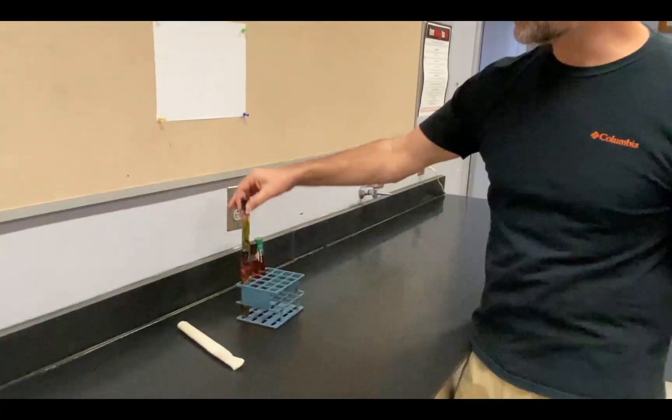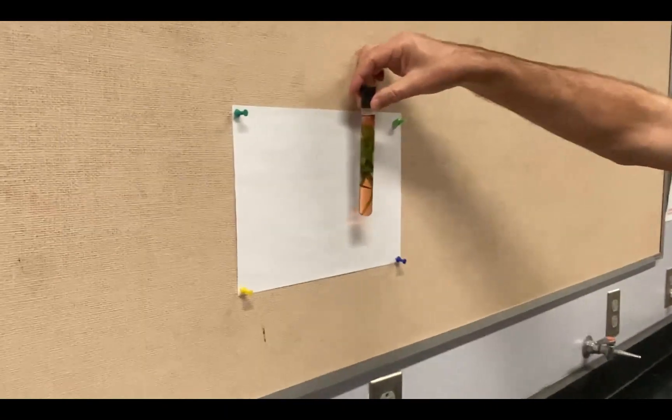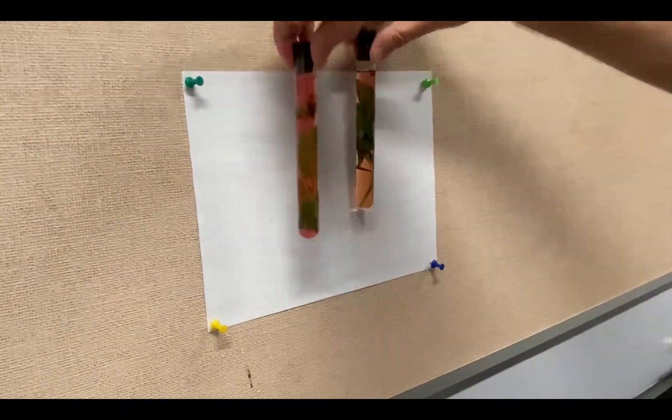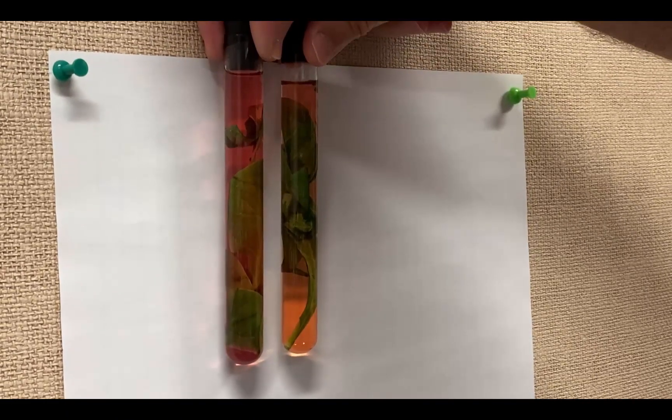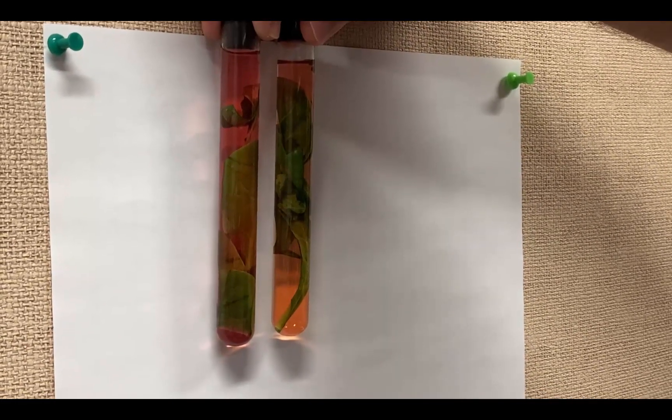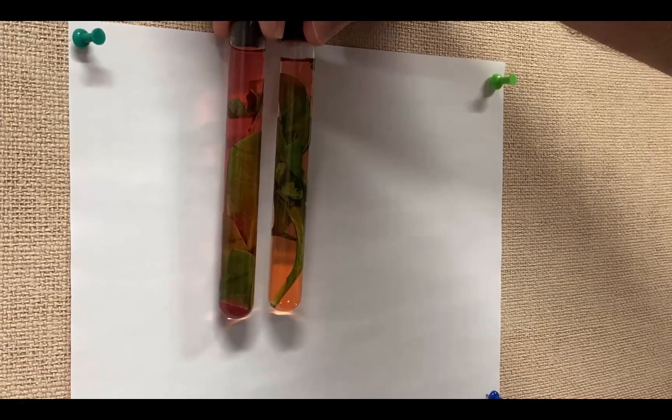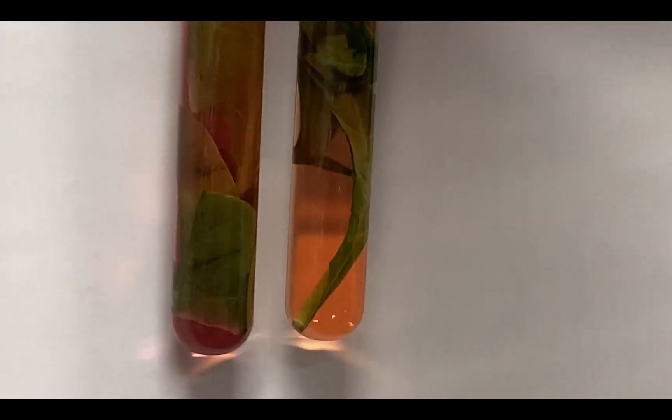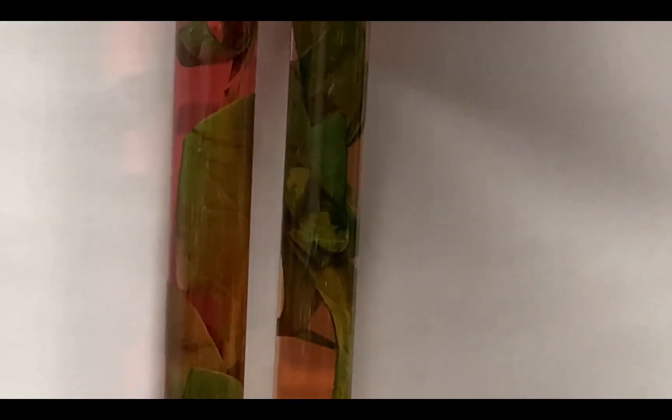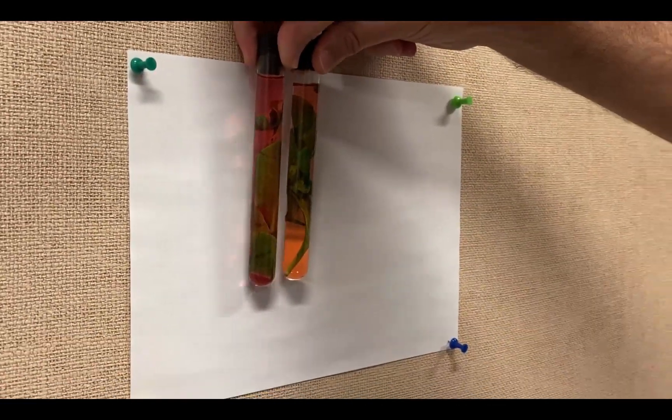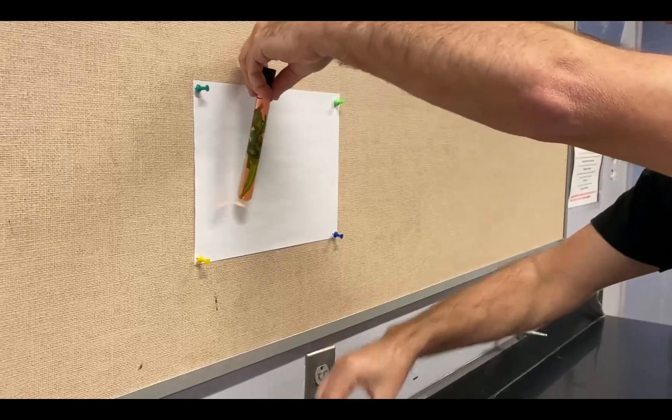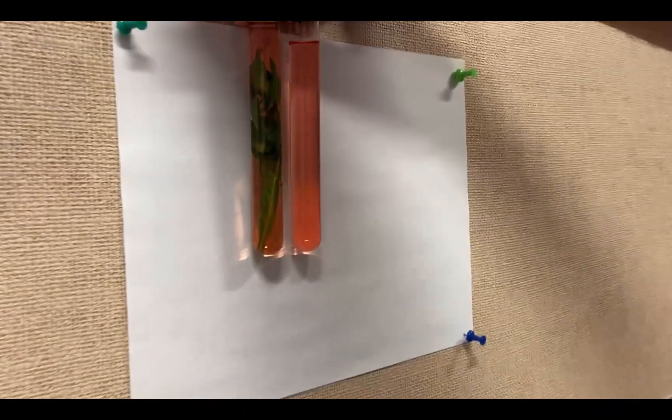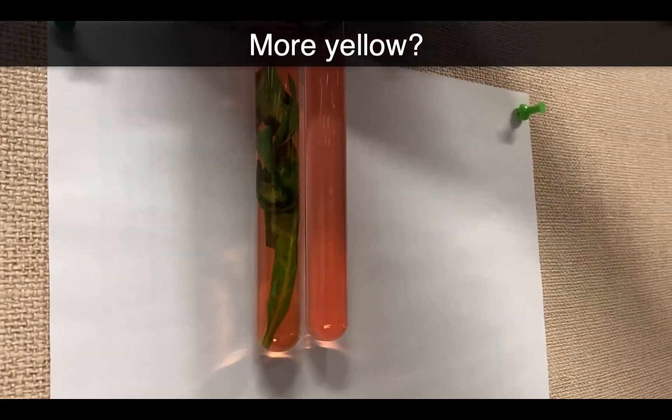Let's take a look at tube number two. I'll hold it up against tube number one. They started out the same color but are definitely not the same color now. We saw a color change in tube one, whereas tube number two actually got more yellow than it was initially.